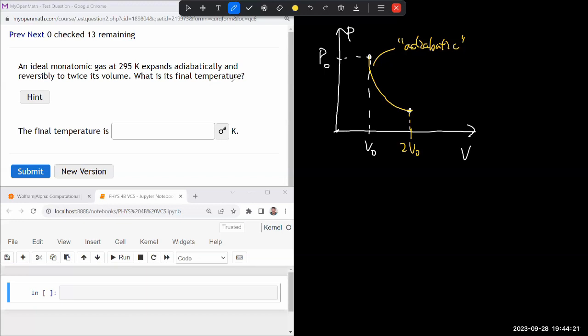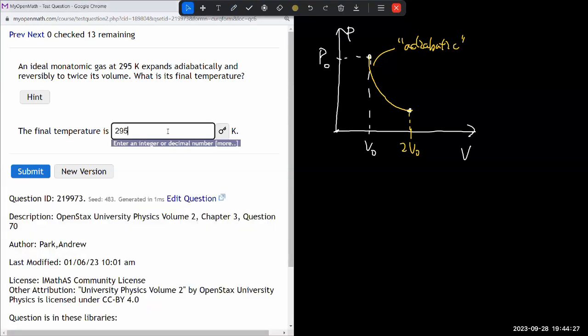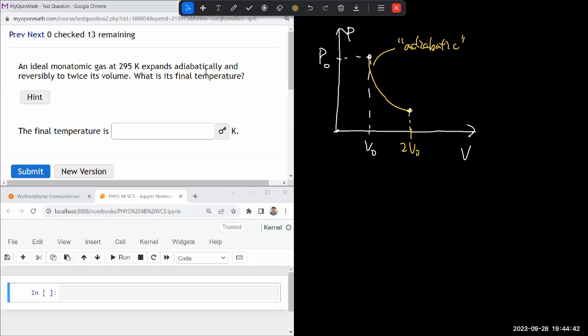And it asks, twice its value to here. What is its final temperature? So if it were an isothermal process, then it would have been easy. It would have been 295, isothermal. So the difference between isothermal and adiabatic process, I guess I can summarize it this way.